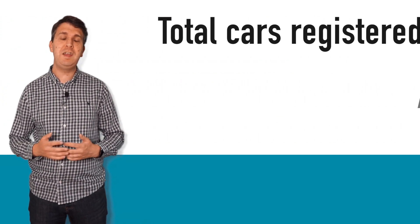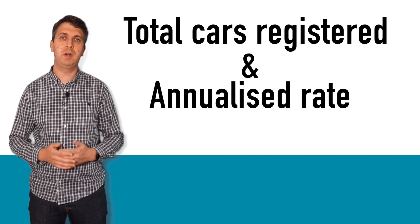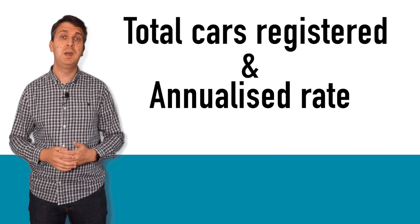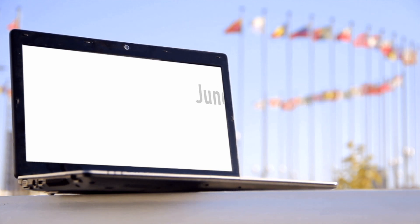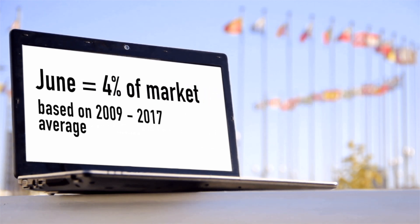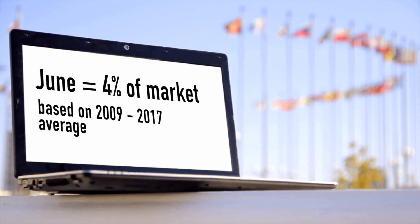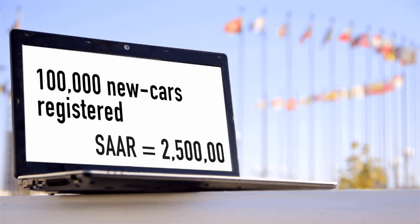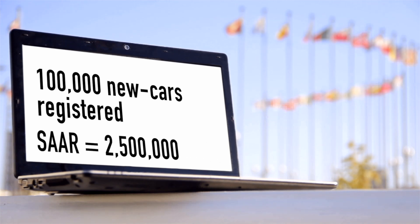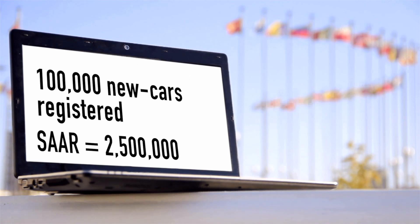This means that each month we have a total number of cars registered and can calculate the annualised rate — i.e., the SAR. For example, in one country, June may represent 4% of all cars registered in the year, based on an average between 2009 and 2017. Therefore, if 100,000 new cars are registered in that month, the SAR would suggest that the yearly total would be 2.5 million vehicles.